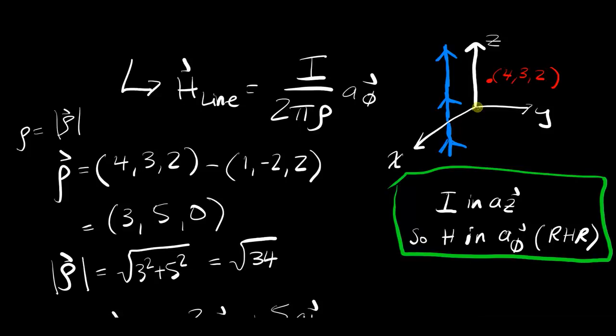So I've drawn the scene again. Now I have the same point at 4, 3, 2. But now I have this blue line of current going the az direction. And the formula for magnetic field due to an infinite line is given by this. And you'll notice that it's going in the a phi direction. So even though the current is going in the z direction, the magnetic field will go in the a phi direction, which is effectively around it.